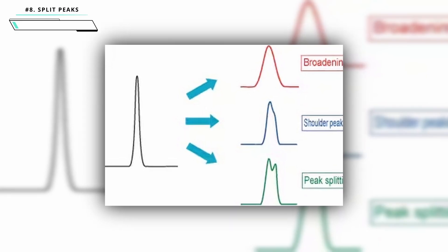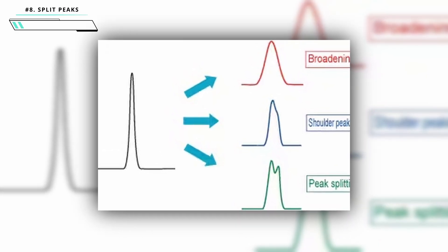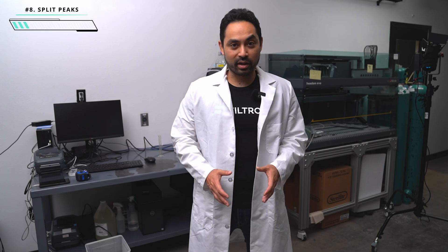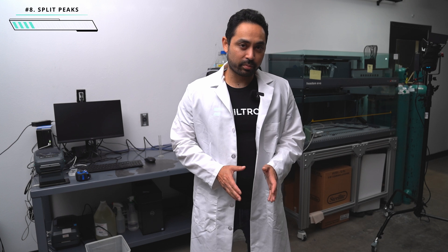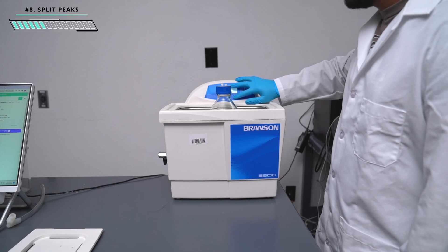Number eight is split peaks — where you expected one peak but now see two. This usually happens when there's an issue with the injection port, likely a bad rotor that needs to be replaced. Other causes include air bubbles, so make sure you degas well. A less common cause is a blockage somewhere, which would typically be accompanied by higher pressures. To resolve a blockage, work from the detector back to the pumps, removing one section at a time to identify whether it's the column or tubing.